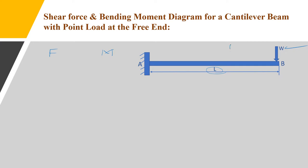On the AB portion, the section XX is located at a distance X from the free end B. The distance from the free end to the XX section is X. At this XX section, we find the shear force and bending moment. The load is applied on the right side of the XX section, so we consider the right portion of the section.